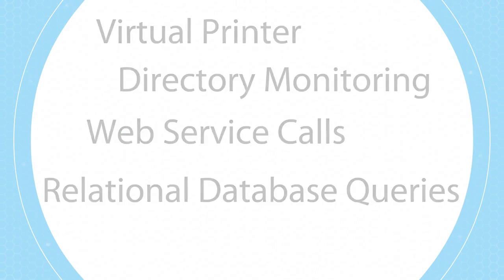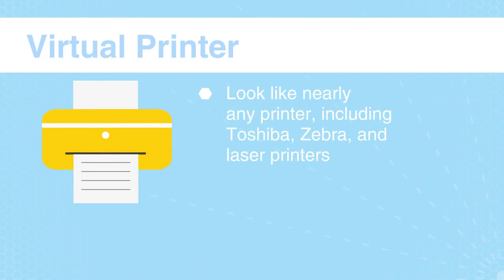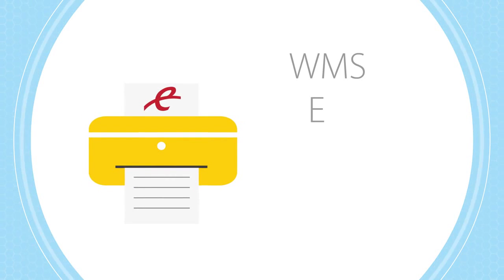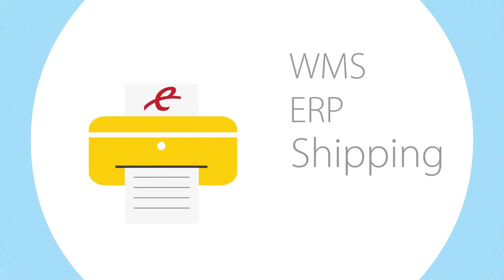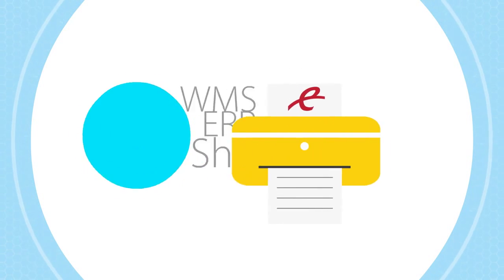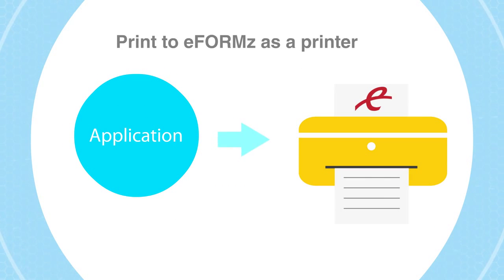One option is having eForms act as a virtual printer. eForms can look like nearly any printer, including Toshiba, Zebra, and laser printers. Simply add eForms as a new printer in your WMS, ERP, or shipping application. Your application prints to the eForms virtual printer, which captures the print stream as a file. eForms combines and formats the file, possibly with data from additional sources, for output to a thermal or laser printer.